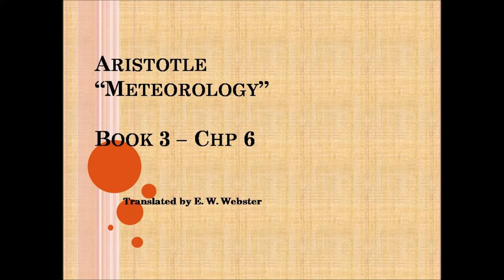Some account has now been given of the effects of the secretion above the surface of the earth. We must go on to describe its operations below, when it is shut up in the parts of the earth. Just as its twofold nature gives rise to various effects in the upper region, so here it causes two varieties of bodies. We maintain that there are two exhalations, one vaporous, the other smoky, and there correspond two kinds of bodies that originate in the earth, fossils and metals.